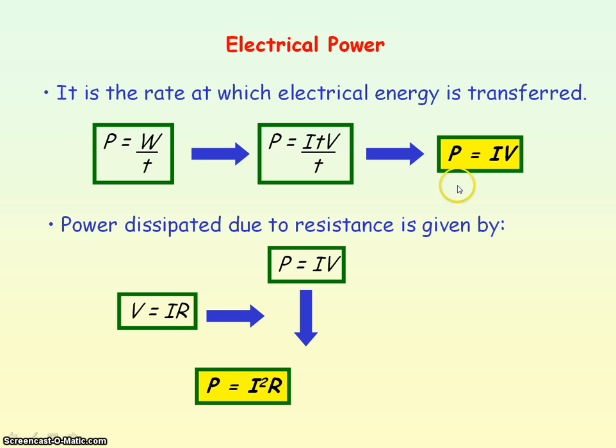We now have two equations for electrical power: one with current and voltage, the second with current and resistance. There's a third equation for electrical power in terms of voltage and resistance.